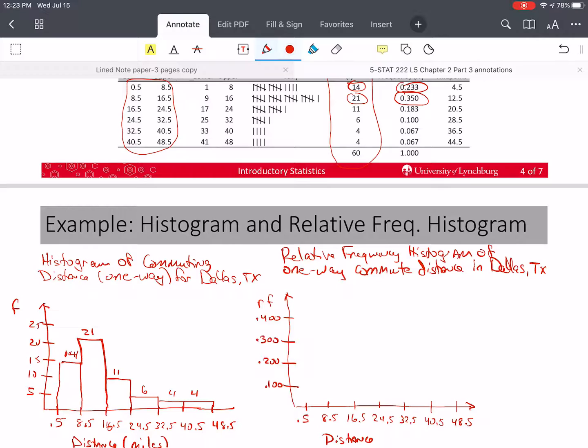So this first bar is going to go up to 0.233. Again, I'm not going to worry about exactly where that is. I'm going to approximate it, and then I'm going to put 0.233 by it. The next one has to go up to 0.35. Let's say that's about there. 0.350.